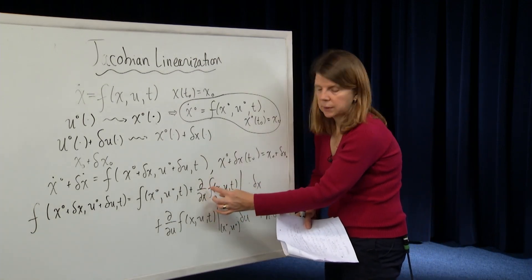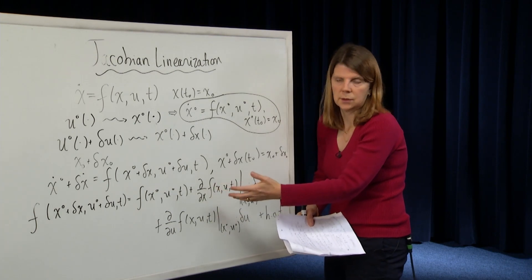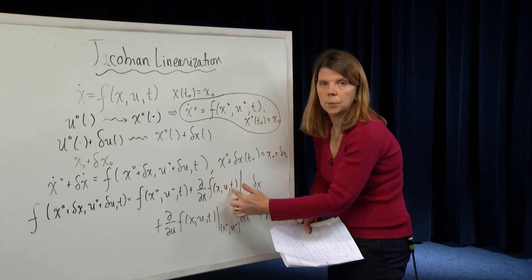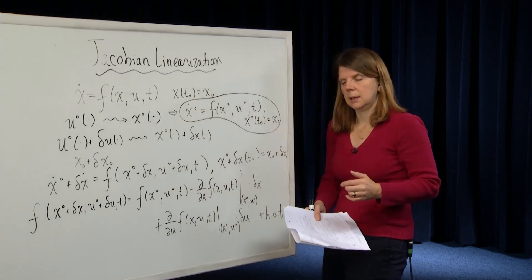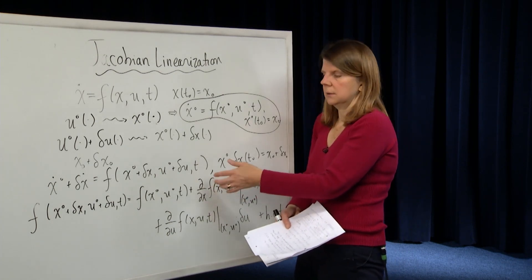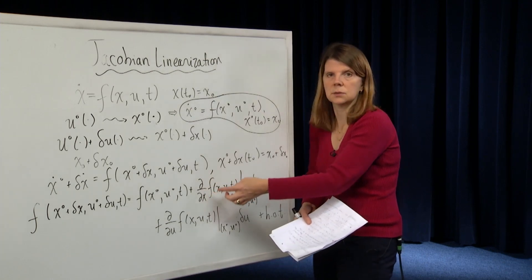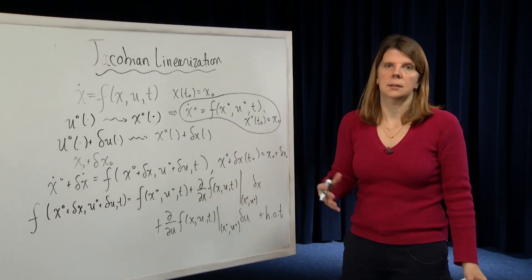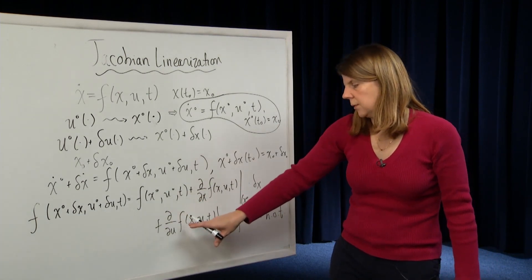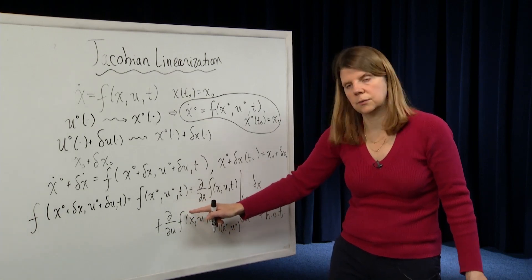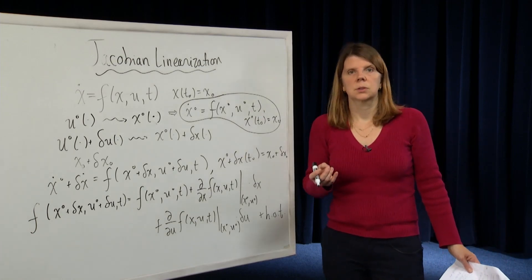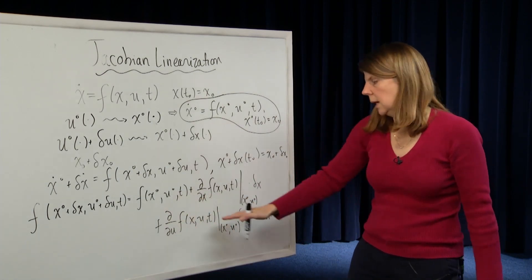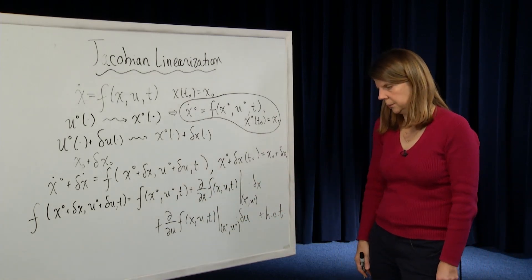These derivative terms are Jacobian matrices. The term df/dx is the derivative of a vector-valued function — f has n components — with respect to an n-dimensional state x. So it's an n×n matrix whose first row is [df₁/dx₁, df₁/dx₂, ..., df₁/dxn] and last row is [dfn/dx₁, ..., dfn/dxn]. Similarly, df/du is the Jacobian of f with respect to the input, which is n×ni dimensional, where ni is the input dimension.